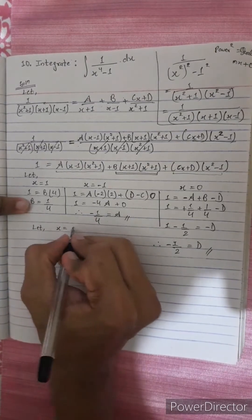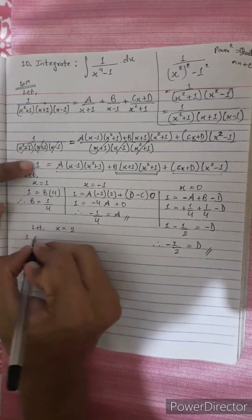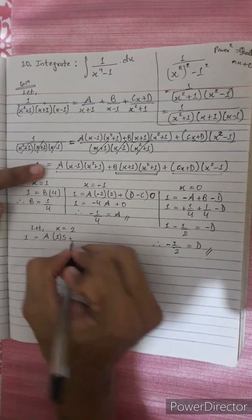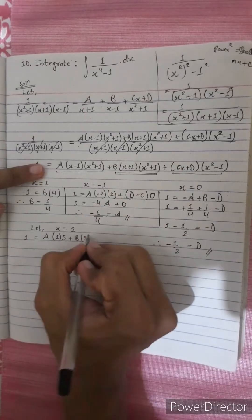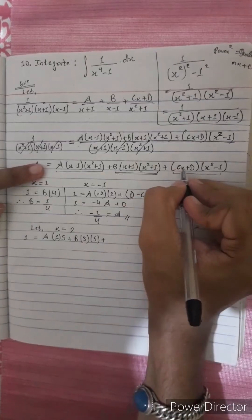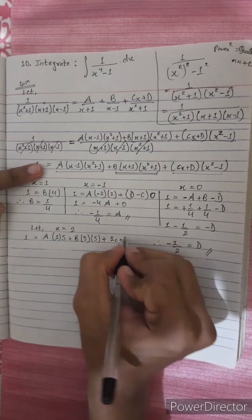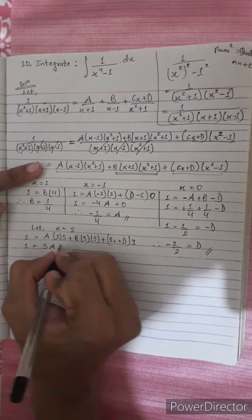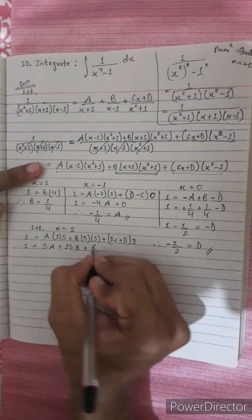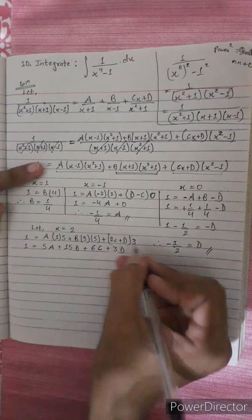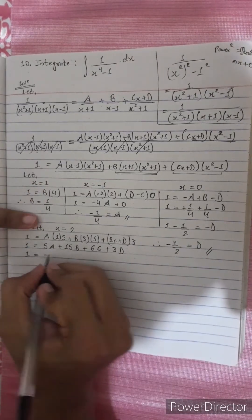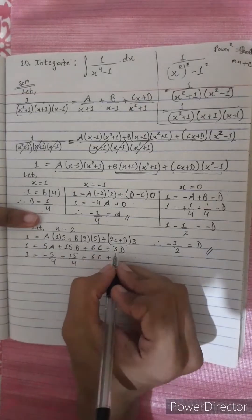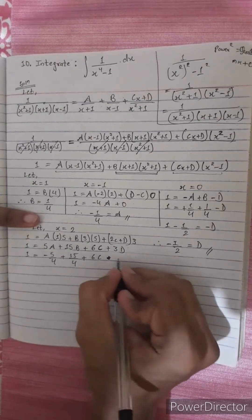Let x equals 2. Then 1 equals A times (2 minus 1)(4 plus 1) plus B times (2 plus 1)(4 plus 1) plus (2c plus d)(4 minus 1). This gives 1 equals 5A plus 15B plus 6c plus 3d. Substituting our known values: minus 5/4 plus 15/4 plus 6c plus 3 times (minus 1/2), and solving for c.